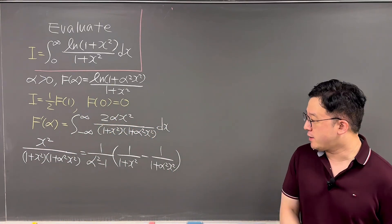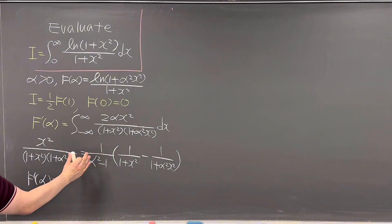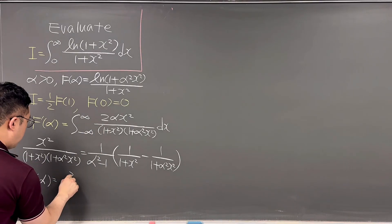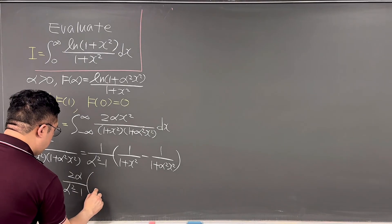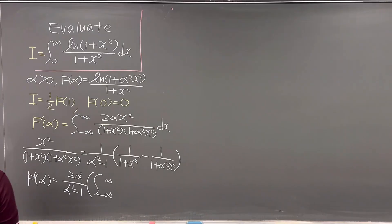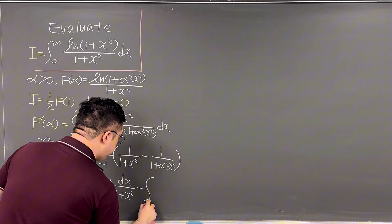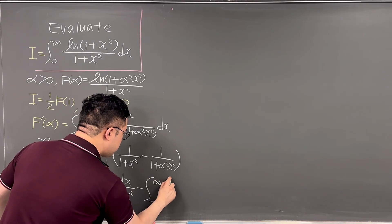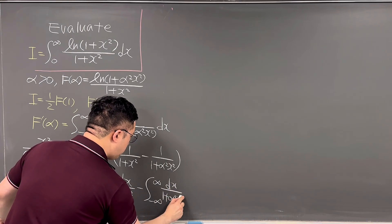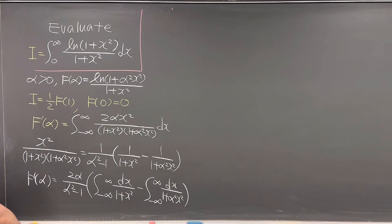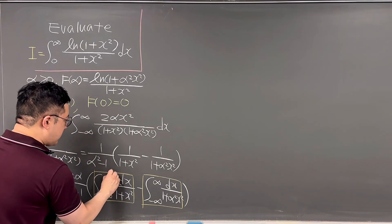So we can rewrite f'(alpha) as 2alpha over (alpha² − 1), times the quantity: integral from negative infinity to infinity of dx/(1 + x²), minus the integral from negative infinity to infinity of dx/(1 + alpha²x²). Let's call these integrals 1 and 2.